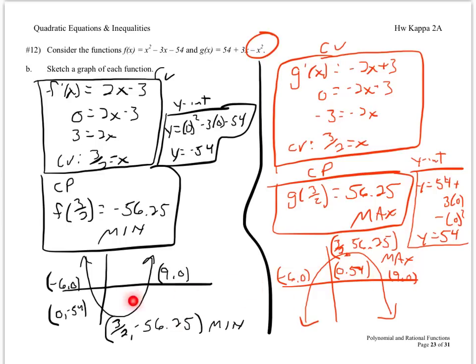The graph of g of x is a parabola with maximum at (3/2, positive 56.25), x-intercepts at 9 and negative 6, and y-intercept of 54. Part C asks for a paragraph comparing and contrasting the two graphs. Both are parabolas with the same x-intercepts. They have the same absolute values for their extrema and y-intercepts. The y-intercept of f is negative 54, g is positive 54. The minimum of f and maximum of g have the same coordinates except for the sign of the y-value. In summary, these two graphs are symmetric with respect to the x-axis — they are mirror images of each other.